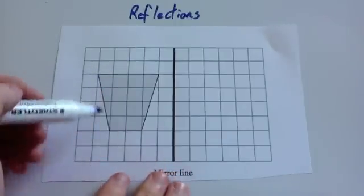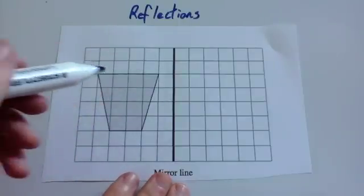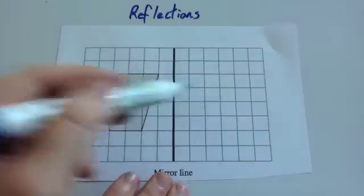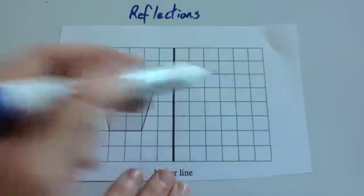So here we've got our trapezium and we've got our mirror line. We want to reflect this trapezium in the mirror line. So this is the object. We want to reflect it and get the image.